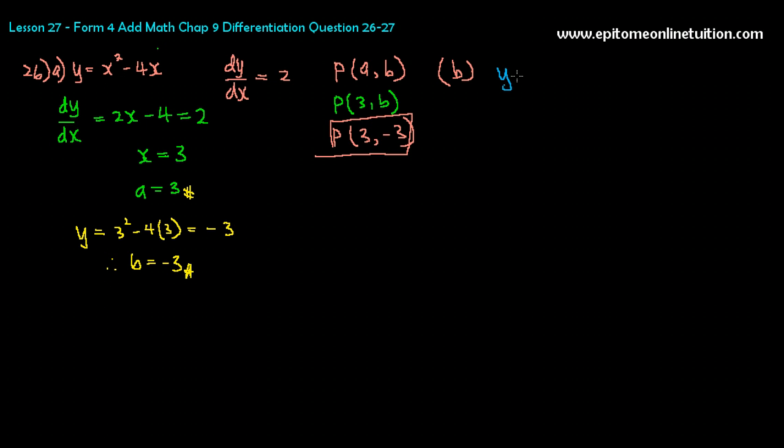So the answer: y minus y1, y1 is negative 3, so it becomes plus 3, equals to m(x minus x1), which is 3. So y equals 2x minus 6 minus 3. So y would equal to 2x minus 9. This is the equation of the straight line or the tangent that passes through the curve at this point. That's it for 26B.